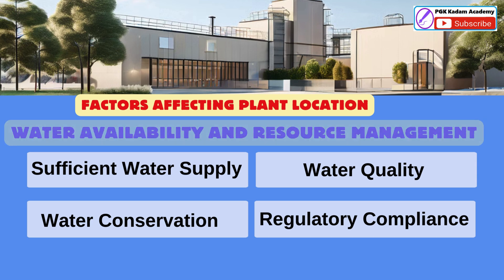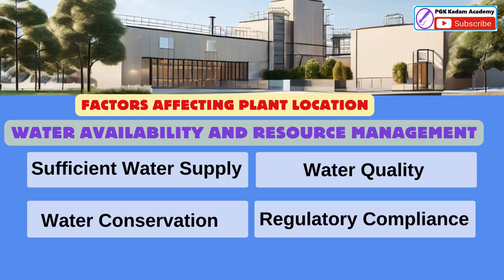The final factor is Water Availability and Resource Management. Sufficient Water Supply: Access to sufficient water supply is crucial for processing, cleaning, and other industrial purposes. Ensuring a reliable water source is essential for continuous operation.